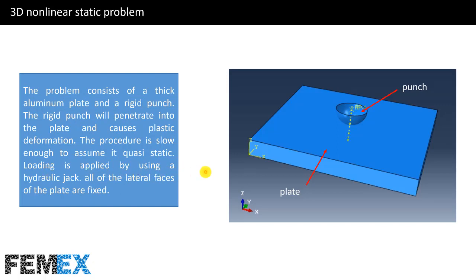The problem consists of a thick aluminum plate and a rigid punch. This is the thick aluminum plate and this is the rigid punch. The rigid punch will penetrate into the plate and cause plastic deformation. The procedure is slow enough to assume quasi-static loading, applied by using a hydraulic jack. All of the lateral faces of the plate are fixed.